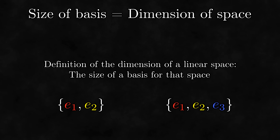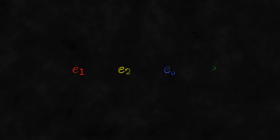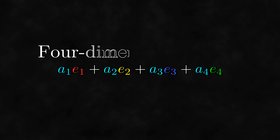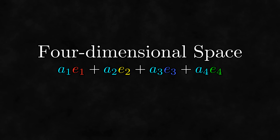This idea is one of mathematicians' primary ways of doing math in higher-dimensional space. Even if we can't truly visualize higher-dimensional space, we can still just pick, say, four symbols that we will consider to be a basis for some linear space. Because this basis has a size of four, this linear space is four-dimensional.